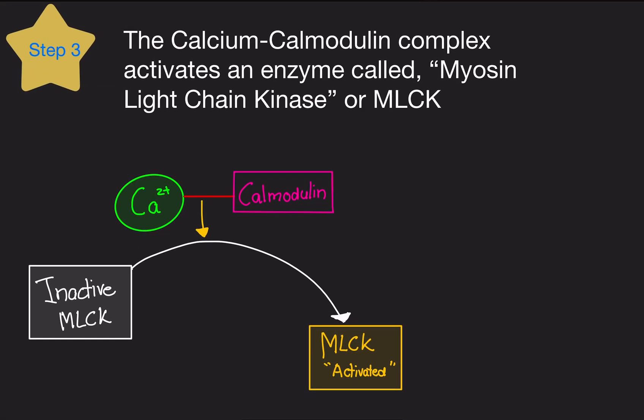The calcium-calmodulin complex activates the enzyme myosin light chain kinase, or MLCK. This inactive MLCK needs to be activated somehow, and the calcium-calmodulin complex does it. Without this complex, MLCK would remain inactive.